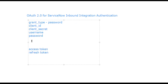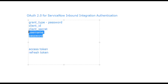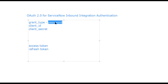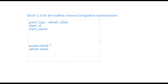For the second time, when they try to get an access token, they can use the refresh token received from the first request and don't need to send the username and password again. When getting the access token through the refresh token, the grant type will be refresh token. This is how the third-party app obtains the access token to consume the ServiceNow API.